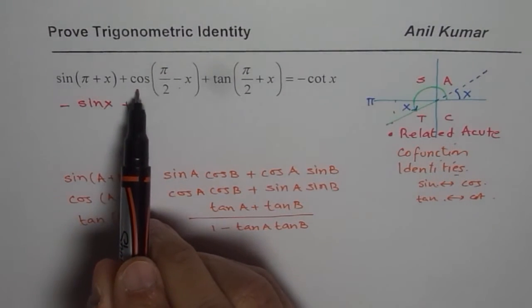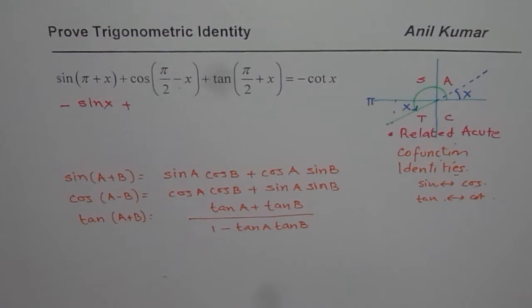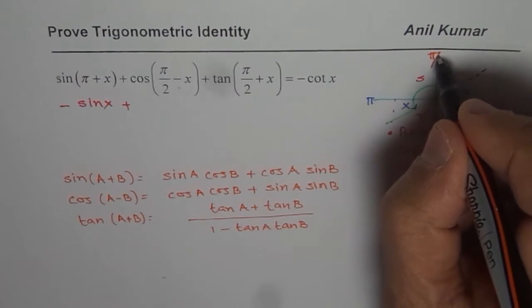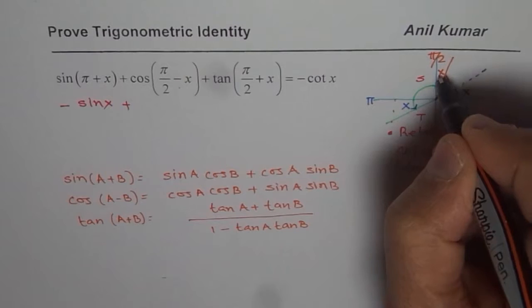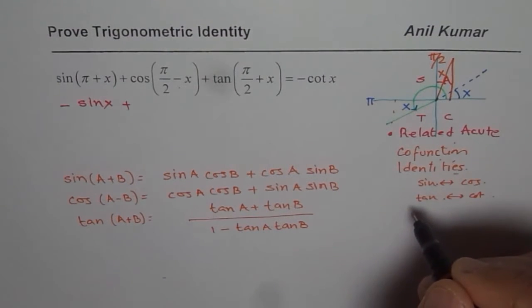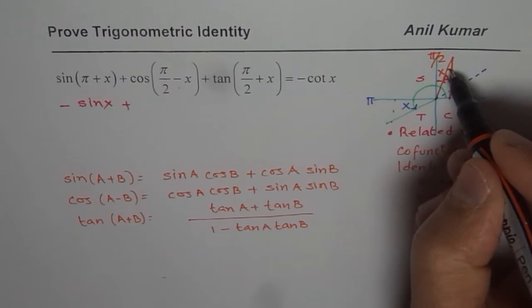Now, when we say cos of pi by 2 minus x, we are trying to say that the angle is, this is pi by 2. So, we say pi by 2 minus x. So, that is the angle. So, that is the angle x we are talking about. And so, we are considering this particular triangle. Now, in this particular triangle, that is the angle x. So, x opposite is that side. This is x.